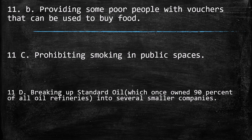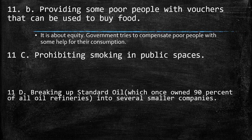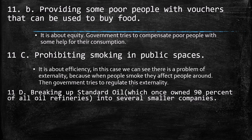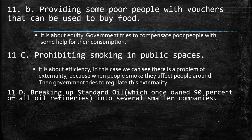Providing some poor people with vouchers that can be used to buy food is evidently equity, because the government tries to compensate poor people who don't have the purchasing power to buy basic goods — providing them some consumption. Prohibiting smoking in public spaces is more about efficiency. In this case we're talking about negative externalities — people who are smoking are affecting others around them with smoke that those people don't deserve. So the government regulates and disincentivizes smoking. This is a case about efficiency.